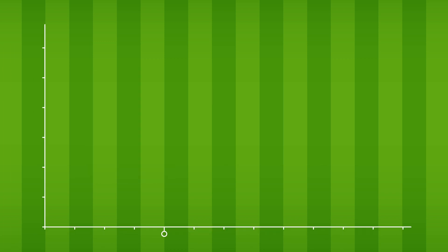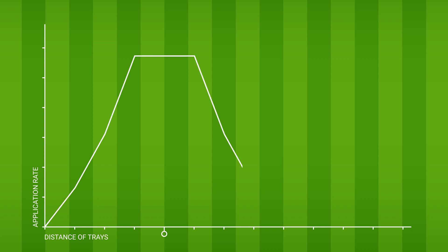Now plot a simple graph of the distance of each of the trays on both sides from the center of the distributor versus the application rate received in each tray. The graph that you have plotted will often be approximately triangular in shape, indicating that the application rate diminishes with the distance away from the distributor.